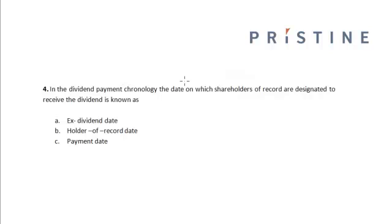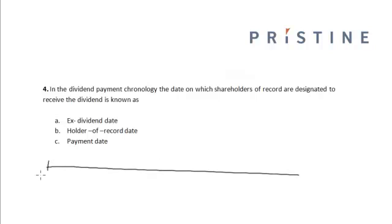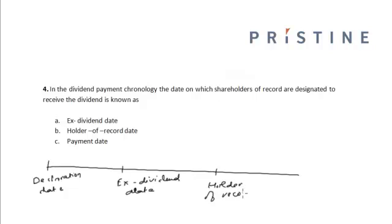In the dividend payment chronology, the date on which the shareholders of record are designated to receive the dividend is known as — let us first look at the dividend payment chronology. First we have the declaration date, then the ex-dividend date, then the holder of record date, and finally the payment date.